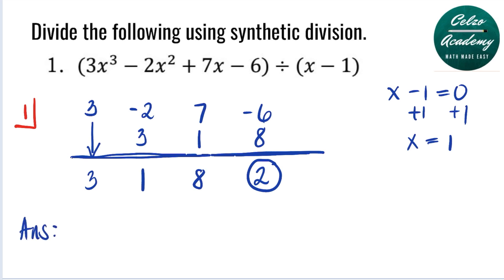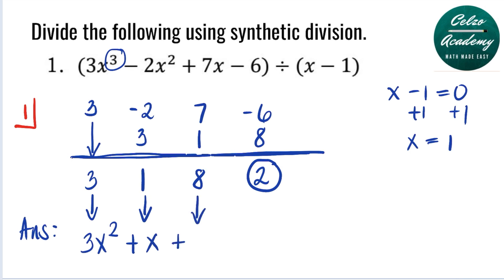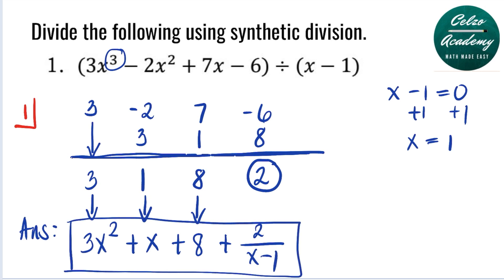The quotient is always one degree lower than our dividend. The highest power of our dividend is 3, so the answer will begin with x squared. The first leading coefficient is 3, so we write 3x squared. Then x is positive 1, so we write plus x. Then it's positive 8, so we have plus 8. The remainder is 2, and we write plus 2 over the divisor x minus 1. So the answer is 3x squared plus x plus 8 plus 2 over x minus 1.